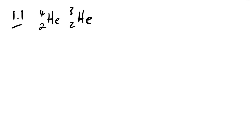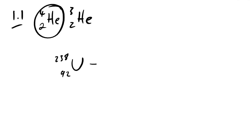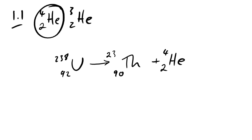Question 1: we have two stable isotopes, helium-4 and helium-3. Helium-4 is produced by a rock containing uranium, so we're asked for the alpha decay equation. We have uranium-238, atomic number 92, decaying to thorium and helium. The bottom number is 90 and the top number is 234.